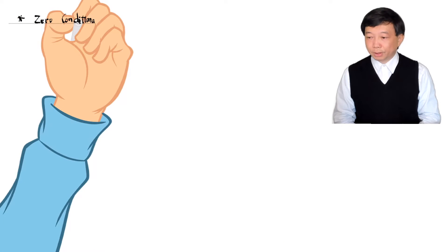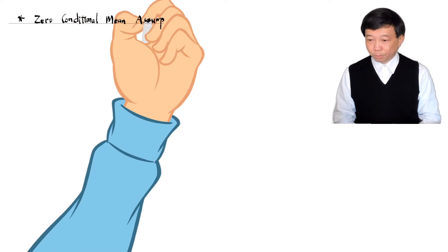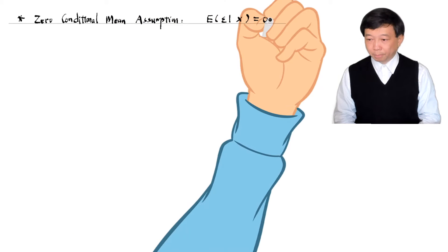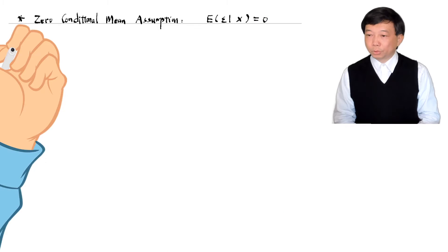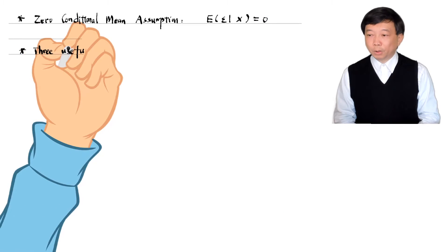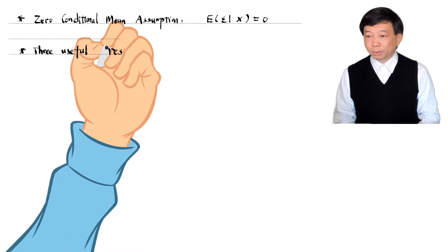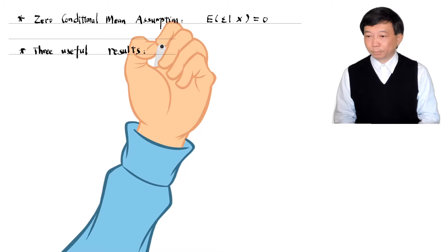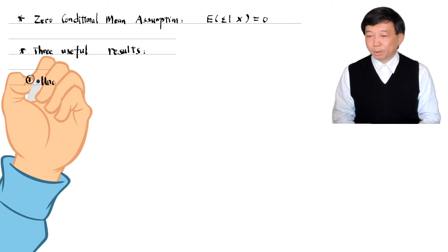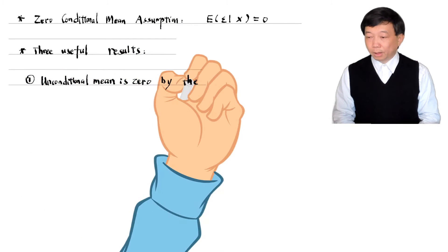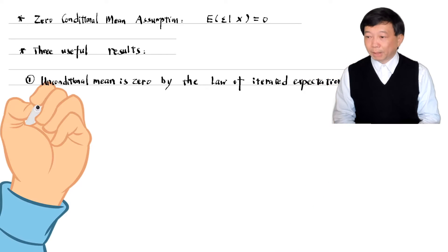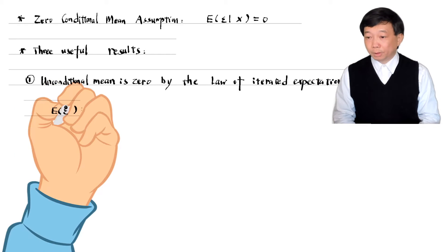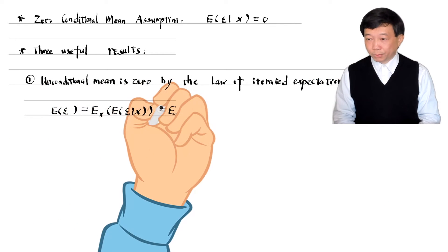Here is the zero conditional mean assumption written in matrix form. Three useful results follow from this assumption. First, the unconditional mean is also zero by the law of iterated expectations.